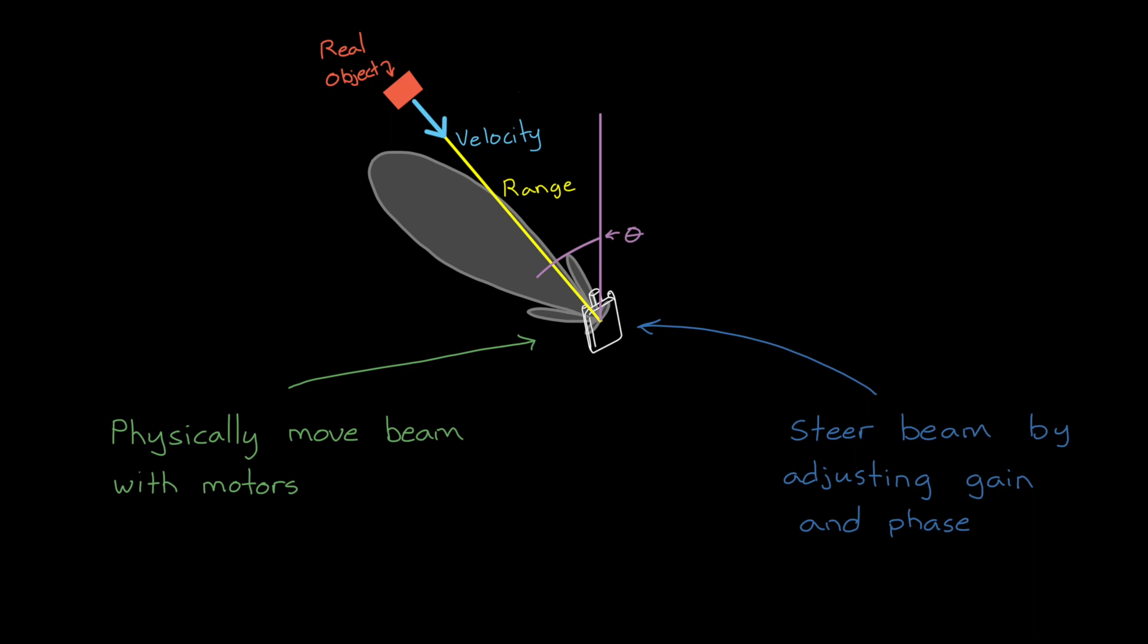But what I want to talk about in this video is that there is a way to determine the angle to an object more accurately than the width of the transmit beam itself. In this way, we can have a wide beam that's fixed and still know where an object is within that beam. And the solution is to have multiple receive antennas. For example, imagine we have two receive antennas that are separated by a distance d.